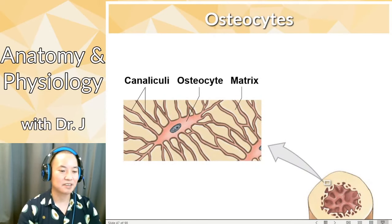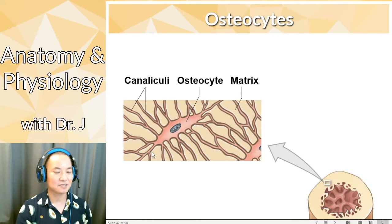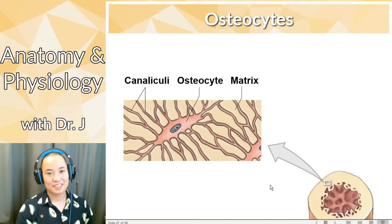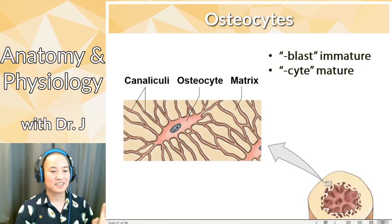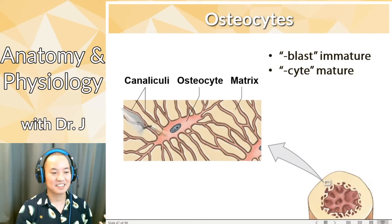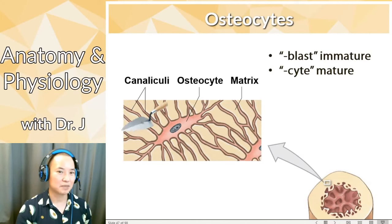Osteocytes, compared to osteoblasts, are already surrounded by bone matrix instead of being free at the periphery. These little pockets they're trapped in are called lacunae. Because they can't move or build freely, their role is not so much building new bone mineral and matrix — they're more about maintenance. Think of it this way: osteoblasts are like young construction workers, active and able to do more. Osteocytes are the mature versions — a bit retired and less active, but still very important, focusing on maintaining their surroundings.